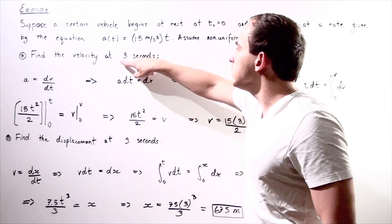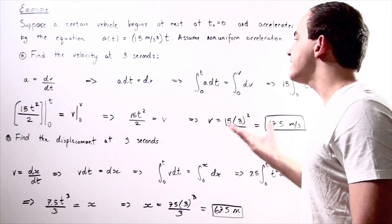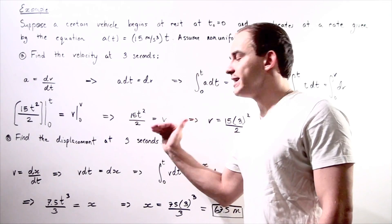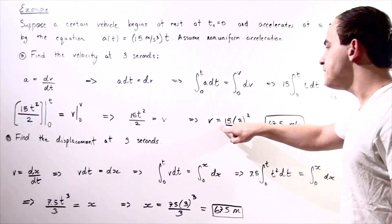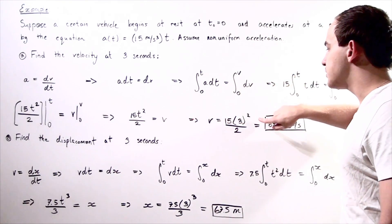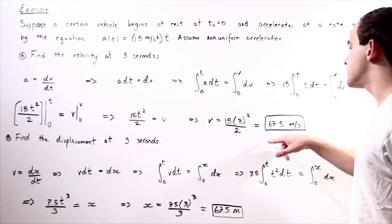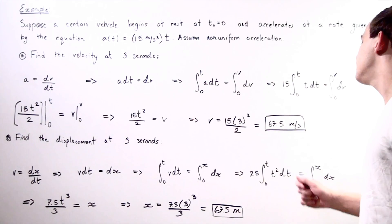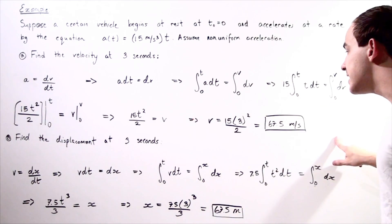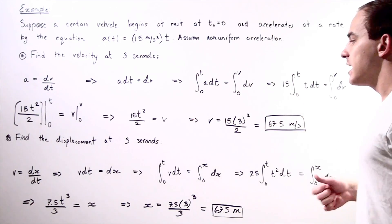So v(t) = 7.5t² is our equation giving us velocity with respect to time. If we plug in three seconds, we get 15 times 3 squared divided by 2 — that's 9 times 15 divided by 2 — which gives us 67.5 meters per second as our velocity after three seconds.